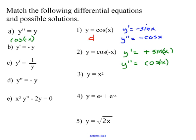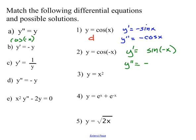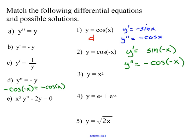Checking y = cos(−x) with y prime = sin(−x) and y double prime = −cos(−x) against each equation: Not A (−cos(−x) ≠ cos(−x)). Not B (cosines and sines differ). Not C. For D: y double prime = −cos(−x) equals −y = −cos(−x). Yes! So number two is also a solution for D. With cosines and sines present, not a solution for E.